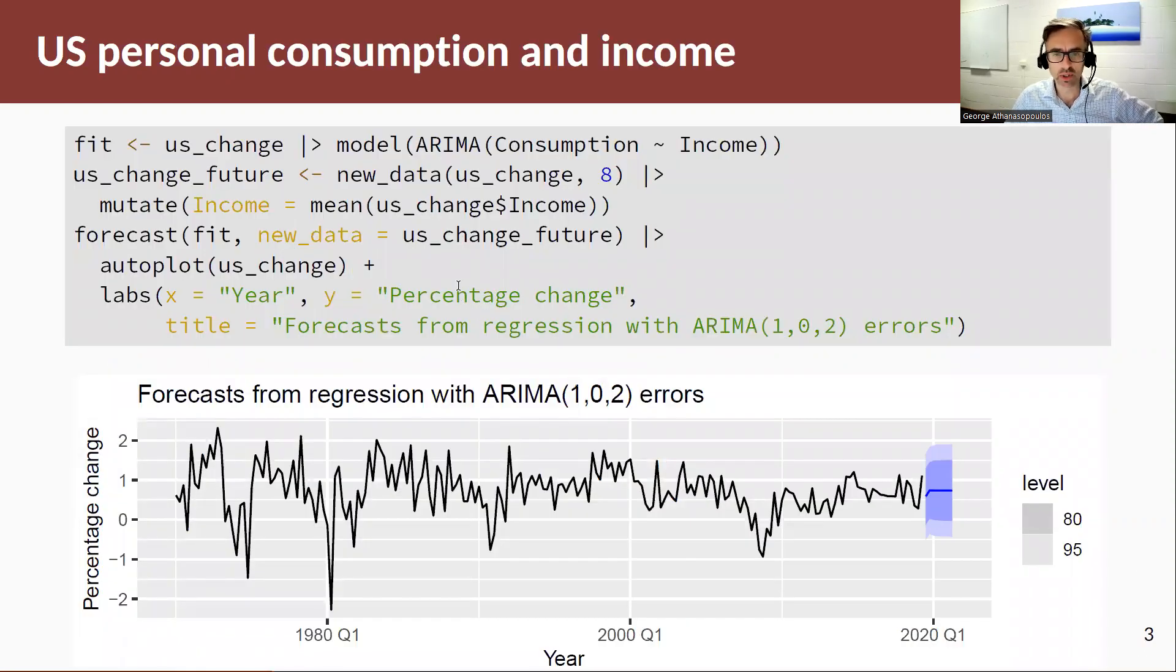So back to the US, to the simple regression—simple regression with dynamic errors—regressing consumption on income. We're going to use the new_data function. We're going to generate forecasts for the next eight steps, and we've seen this again in Chapter 7. We're going to pass this new data or this US change future into the forecast function, and the forecast function will generate some forecasts for us. We assume here that our future of the US change for income is the mean of my historical values, hence the forecasts that I get for the next eight quarters look quite reasonable, and here's some prediction intervals.